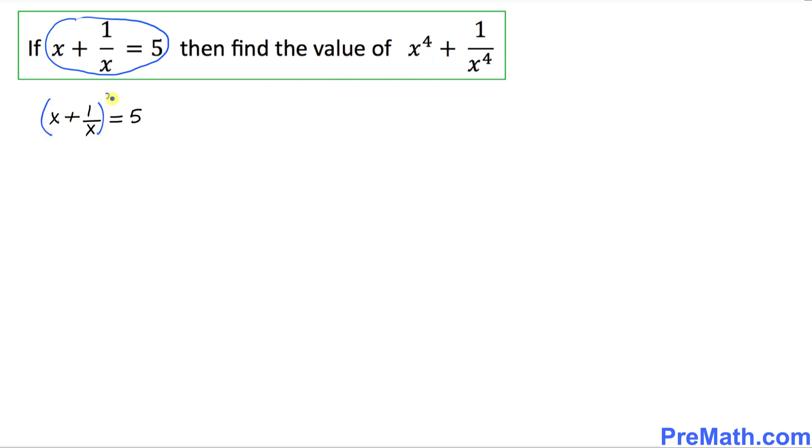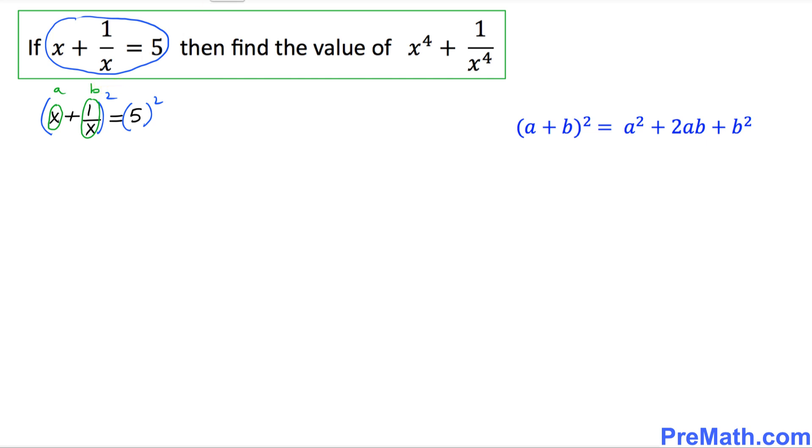We're going to use this well-known formula: a plus b squared equals a squared plus 2ab plus b squared. In this case, x is going to be our a, and this 1 over x is going to be our b.